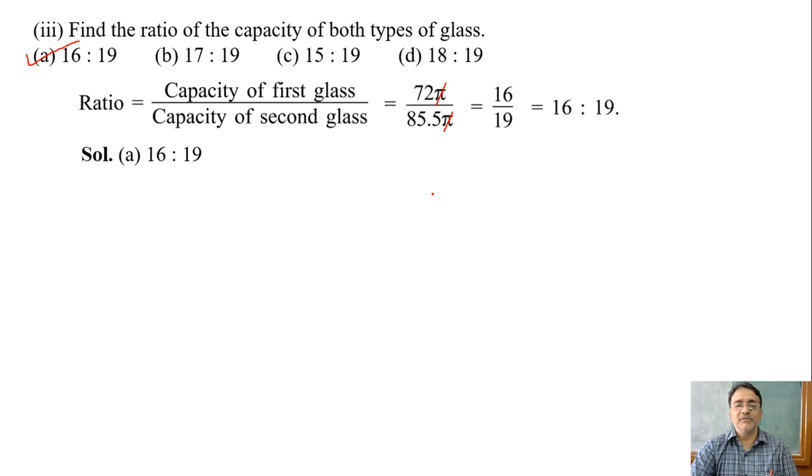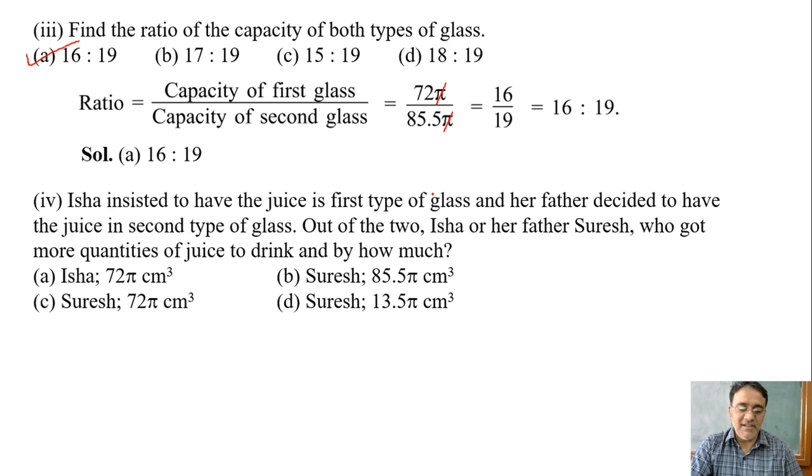Now the fourth question, which is very good. Isha insisted to have the juice in the first type of glass, and her father decided to have the juice in the second type of glass. Out of the two, Isha or her father Suresh, who got more quantities of juice to drink and by how much?